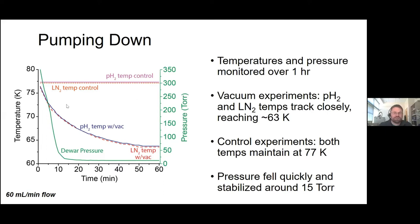We ran these experiments not just with the vacuum pump, but we did the same thing again without the vacuum pump as a control. With those, as expected, the temperature stayed flat at 77 Kelvin the whole time. The pressure under those would have been atmosphere. This is one at 60 milliliters per minute. We ran this at different flow rates. These curves all look very similar.